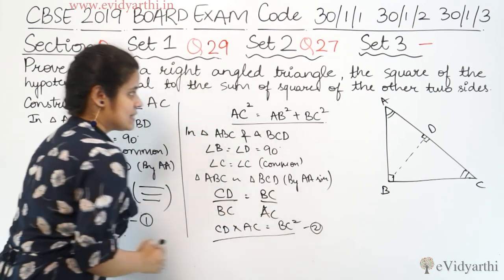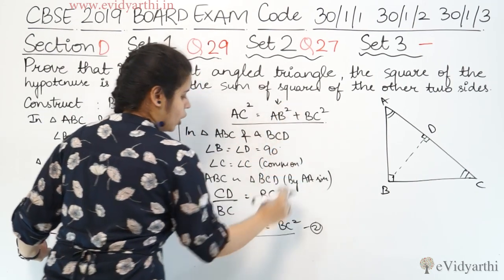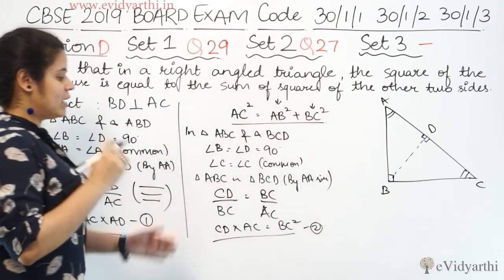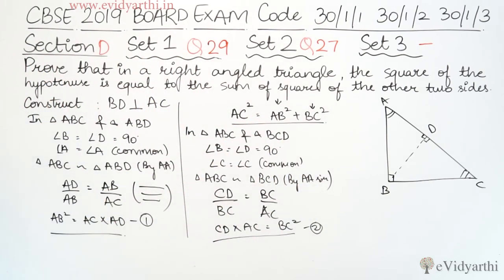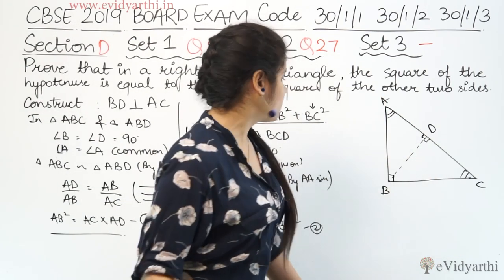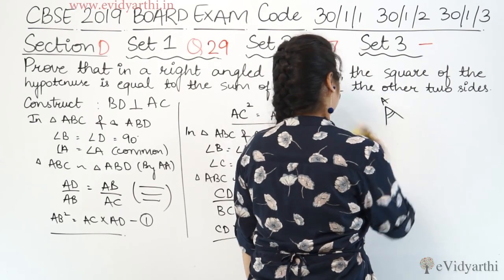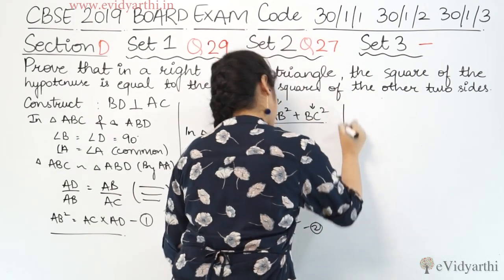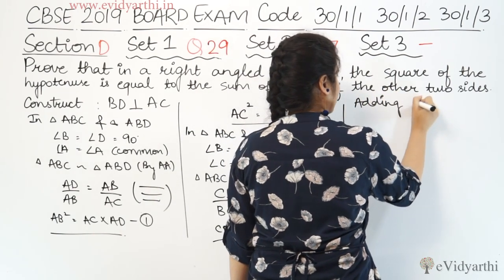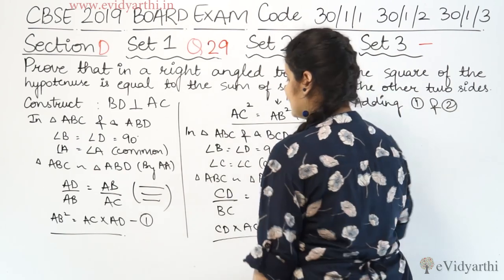यह हमारे पास second चीज आ गई. अब AB² आ गया — मतलब equation 1: AB² = AC × AD. और BC² आ गया — मतलब equation 2: BC² = AC × CD. तो अब हम equation 1 और 2 को add करेंगे. Now adding equation 1 and 2.